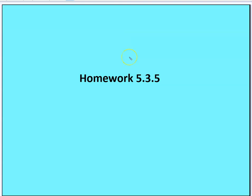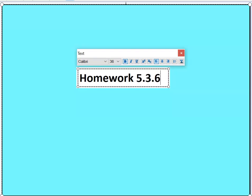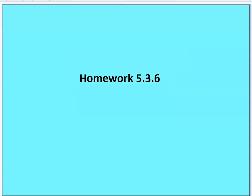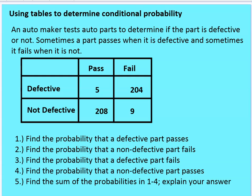This brings us to homework 5.3.6. An automaker tests auto parts — same scenario. Sometimes a part passes when it's defective and sometimes it fails when it is not. You'll answer five questions, including some bonus questions. Please copy this down. I'll stop the video here and move on to the last part of the discussion.